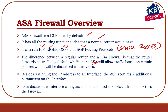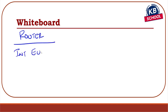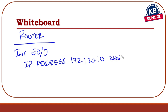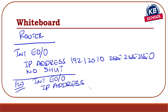There are certain things that are configured differently on an ASA interface compared to a router. On a router, you simply assign an IP address and bring the interface up with 'no shutdown.' On the ASA firewall, you do need to assign an IP address, but there are two additional required components.